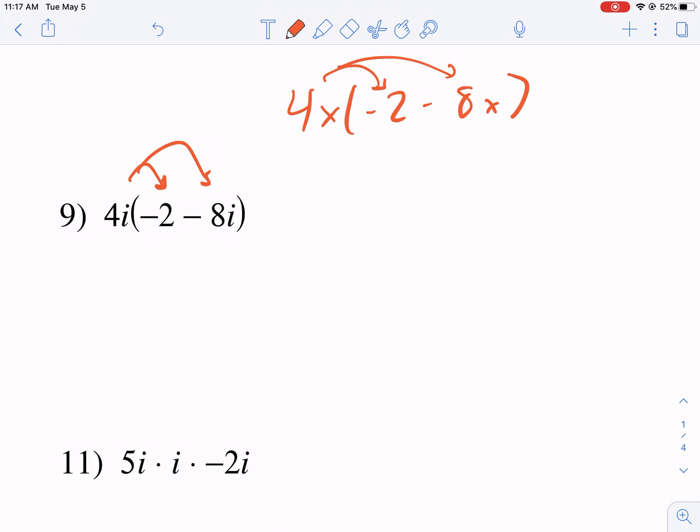and then you combine like terms. So we have -8i here, and then we have -32i, and this is important. We can have an i squared.